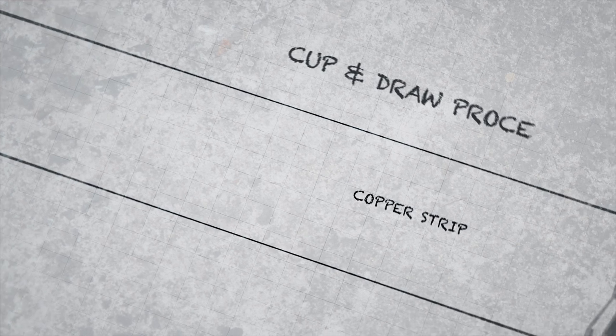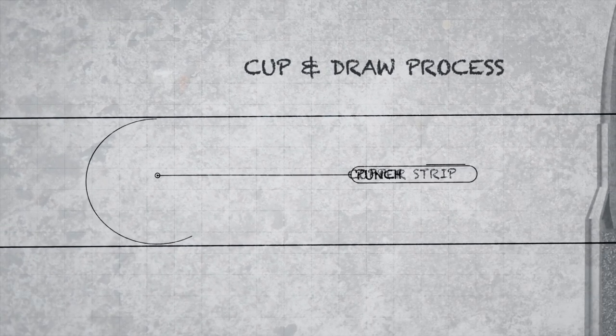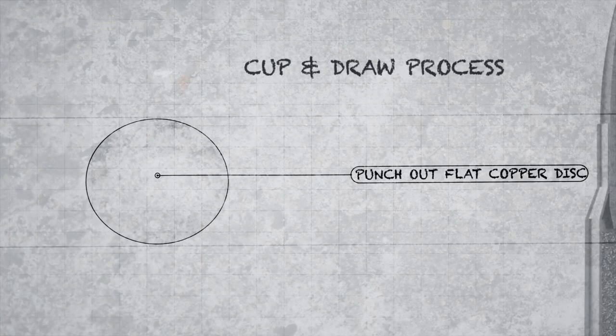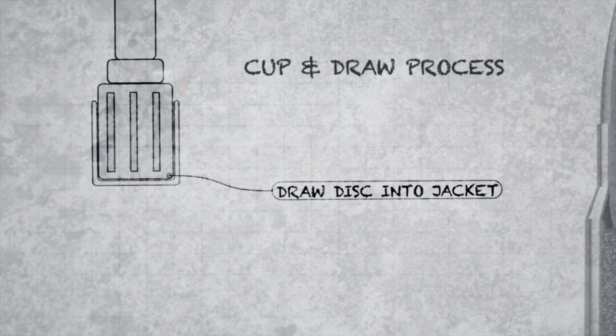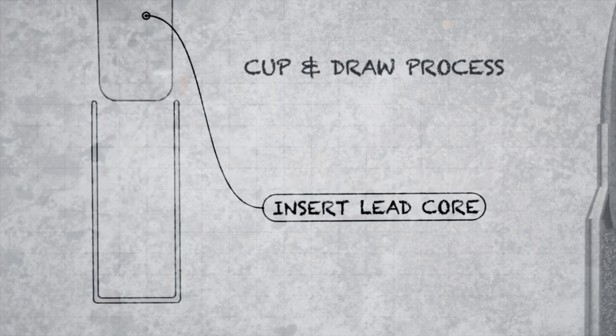With the cup and draw process, you're going to start out with a thin copper ribbon or strip. You're going to punch out a disc, and then draw that out into the jacket. You're going to insert a lead core.